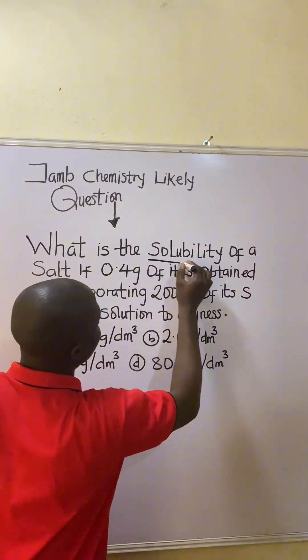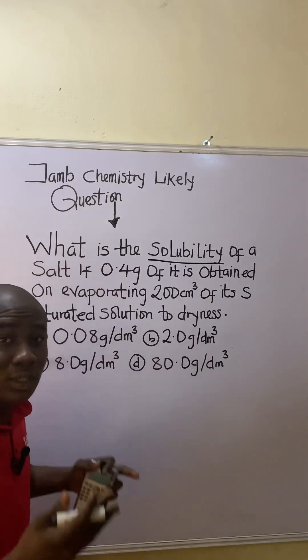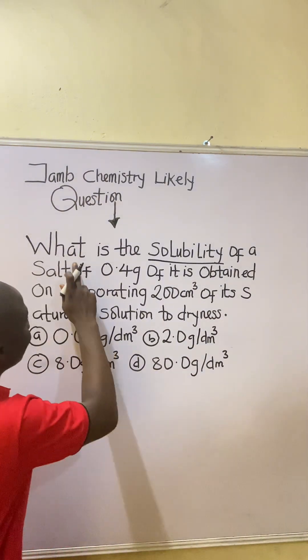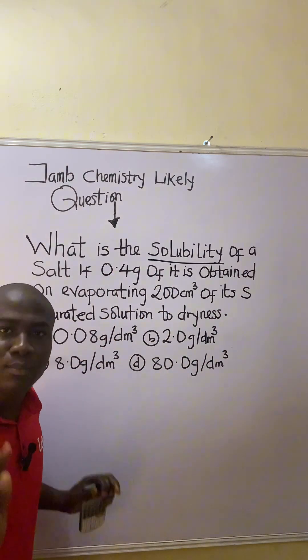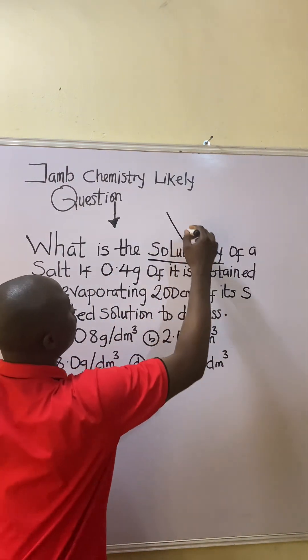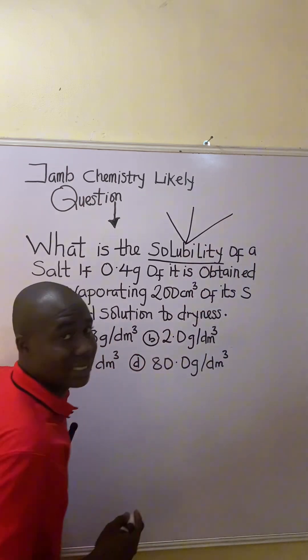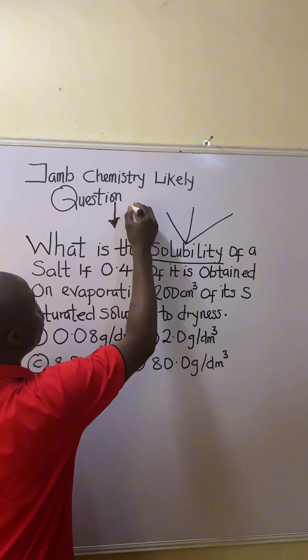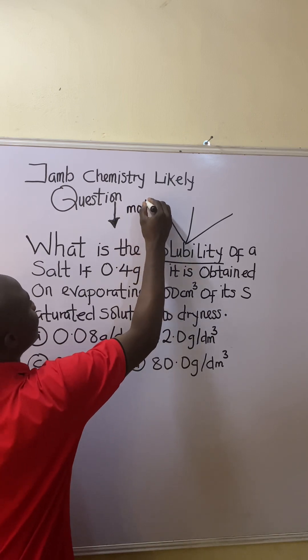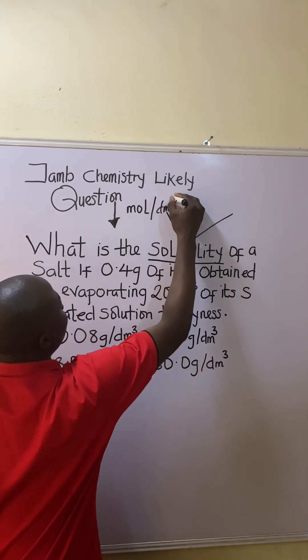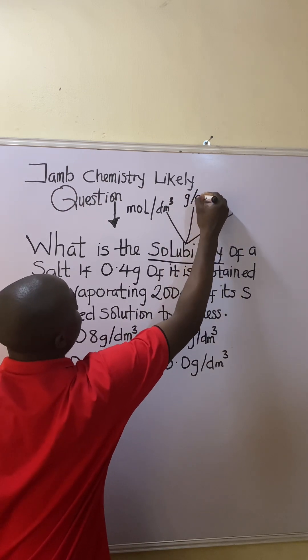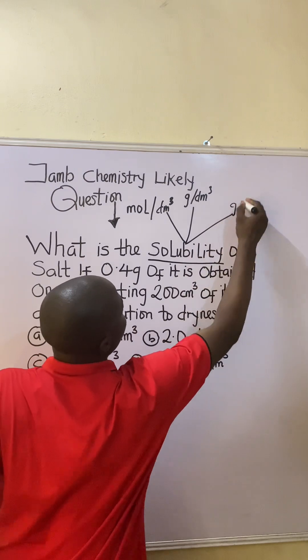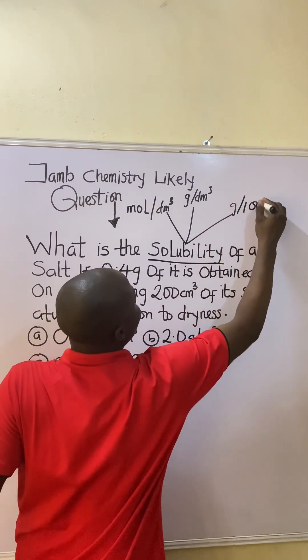You can see that this topic is on solubility, and we have to understand the type of solubility we are to solve for. It must be noted here that for the JAMB level of chemistry exam, solubility can be expressed in three units: moles per dm³, grams per dm³, and grams per 100 grams of water.